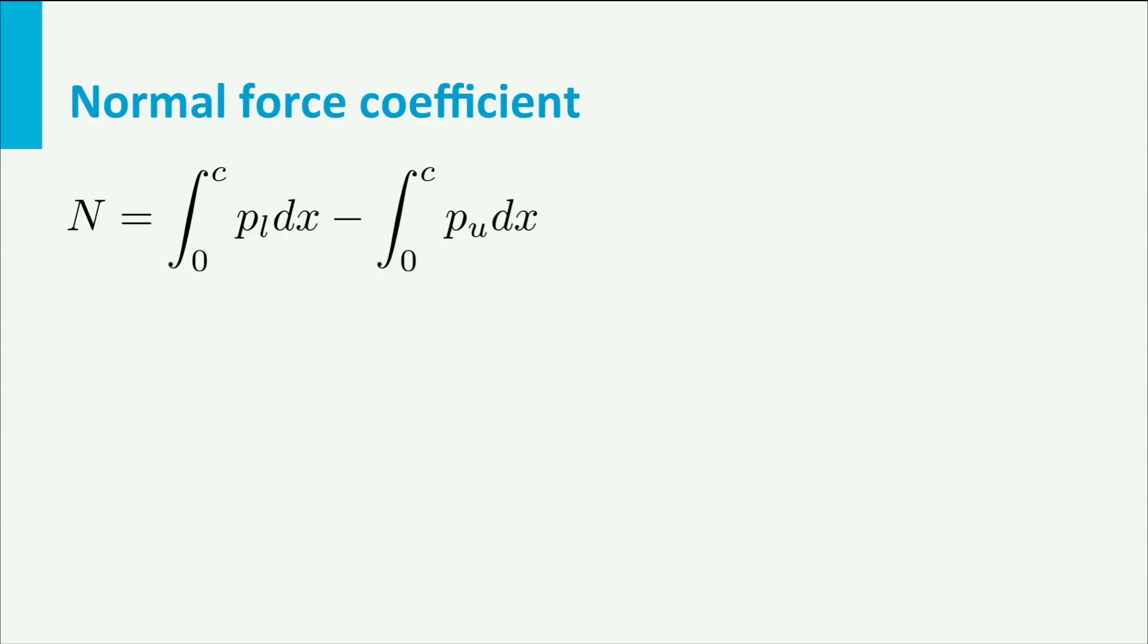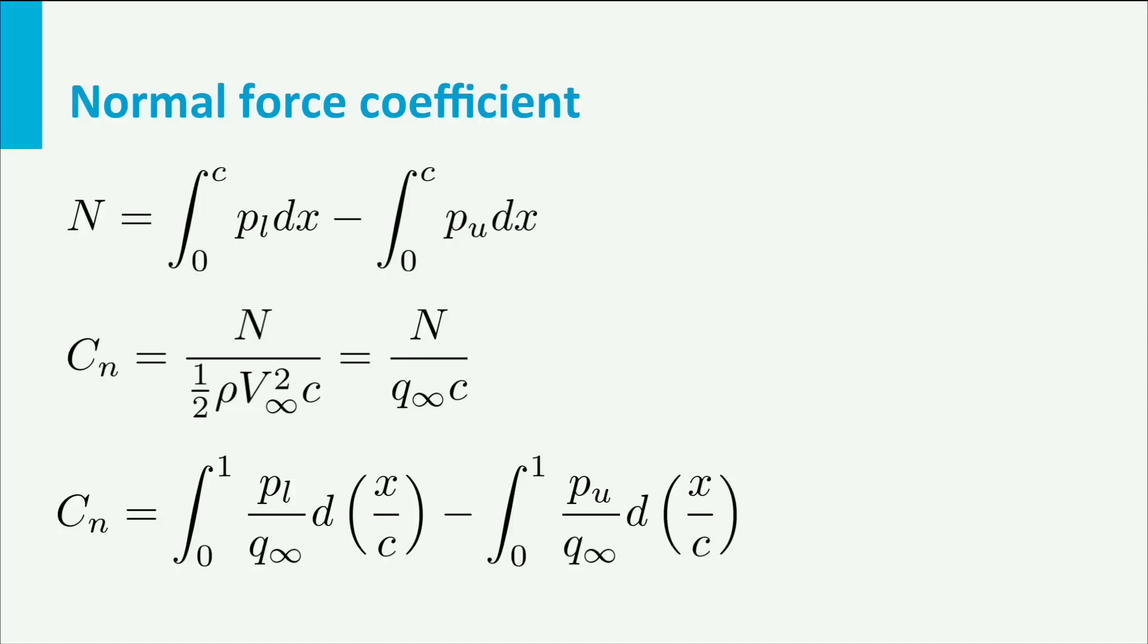Let's introduce here the normal force coefficient of an airfoil, defined as the normal force n divided by the free stream dynamic pressure a half rho v squared times the chord. If we insert this in the equation for the normal force, we get the normal force coefficient is the integral from 0 to 1 of p l over q times dx over c minus p u over q times dx over c.